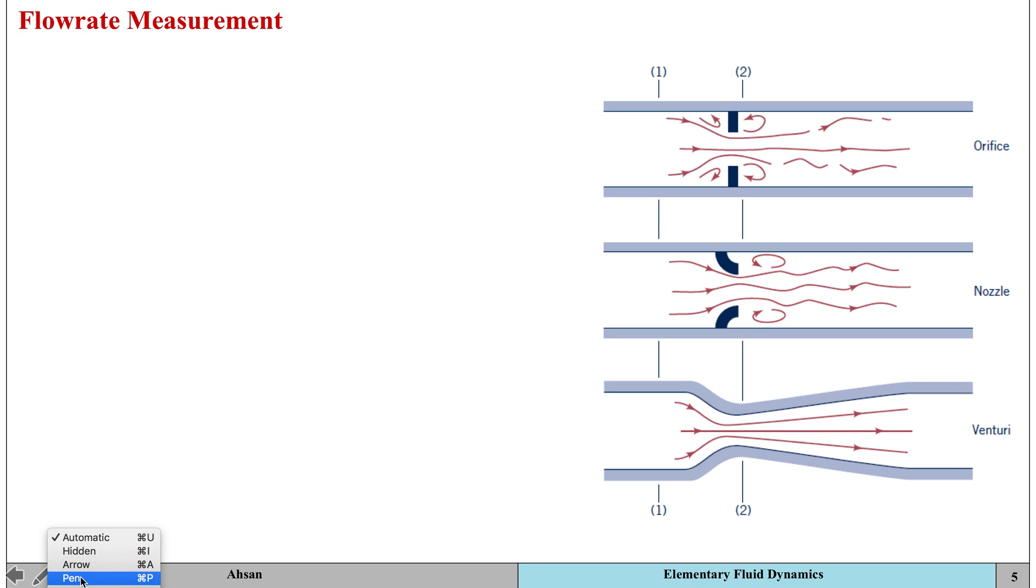In all of these kinds of pipes or nozzles, you place a restriction in the middle. Upstream at section 1 you've got low velocity and high pressure, and at section 2 you've got high velocity and lower pressure. At section 1, velocity is lower and pressure is higher. You measure the pressure difference to find out the flow rate.